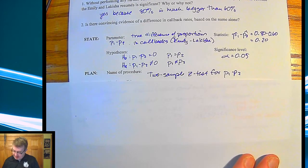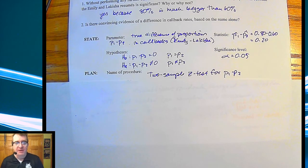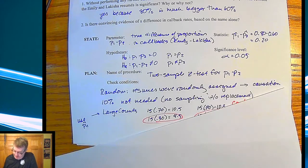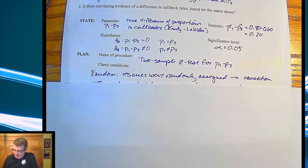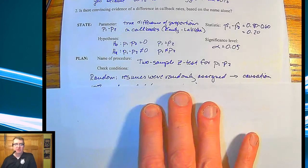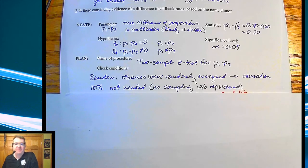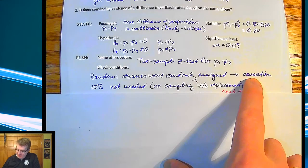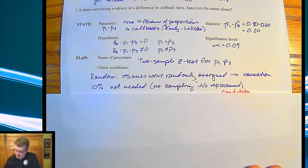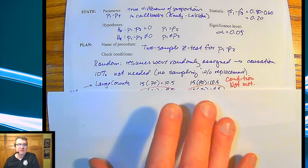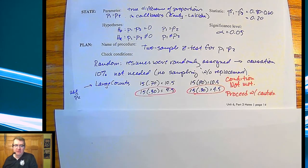So the plan is this. The name of the procedure is a two-sample z-test for P1 minus P2, and for our conditions, a couple of things here. It was random because we randomly handed the resumes out to all of you in theory, in this case, since we're doing this remotely, but you know what I mean. 10% rule, we don't need that because we're not sampling without replacement. So remember, that just kind of gets put us away inside, but you are saying you are doing it. Oh, and by the way, I had causation up here because that's why we do the random one, and then the bottom one, large counts, is to see if we can treat this as a normal distribution.